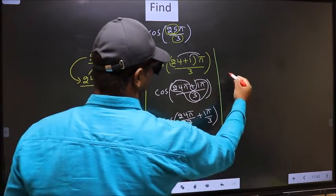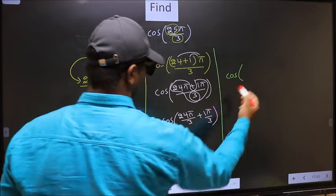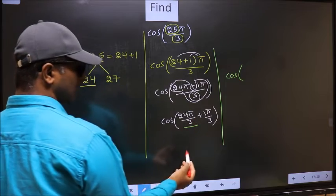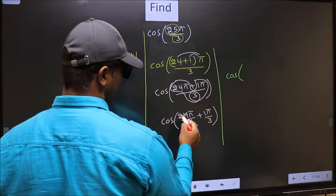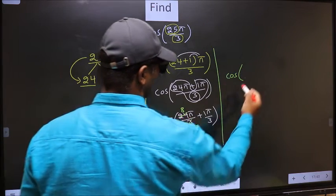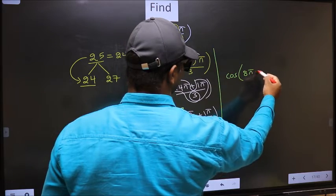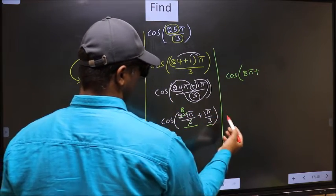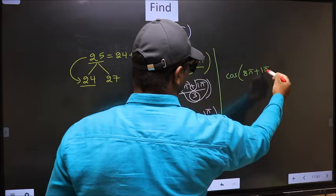Next, cos. Now here you should cancel. 3 goes into itself once, 3 goes into 24 eight times. So we get 8π plus 1π/3.